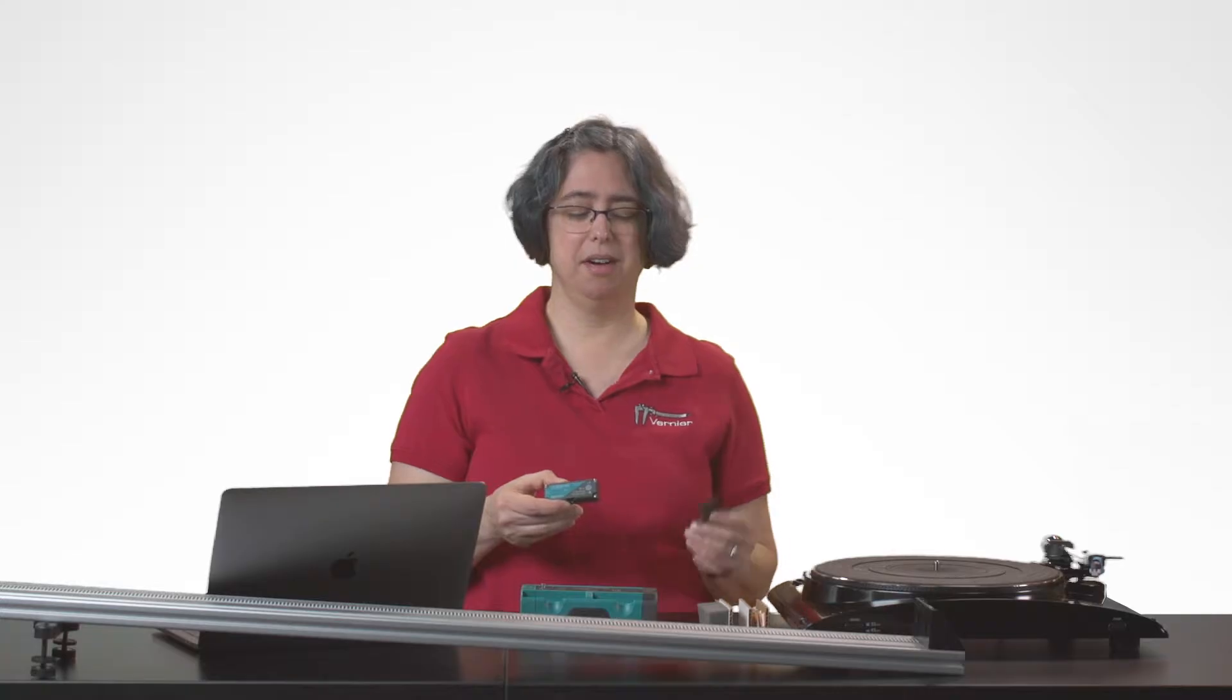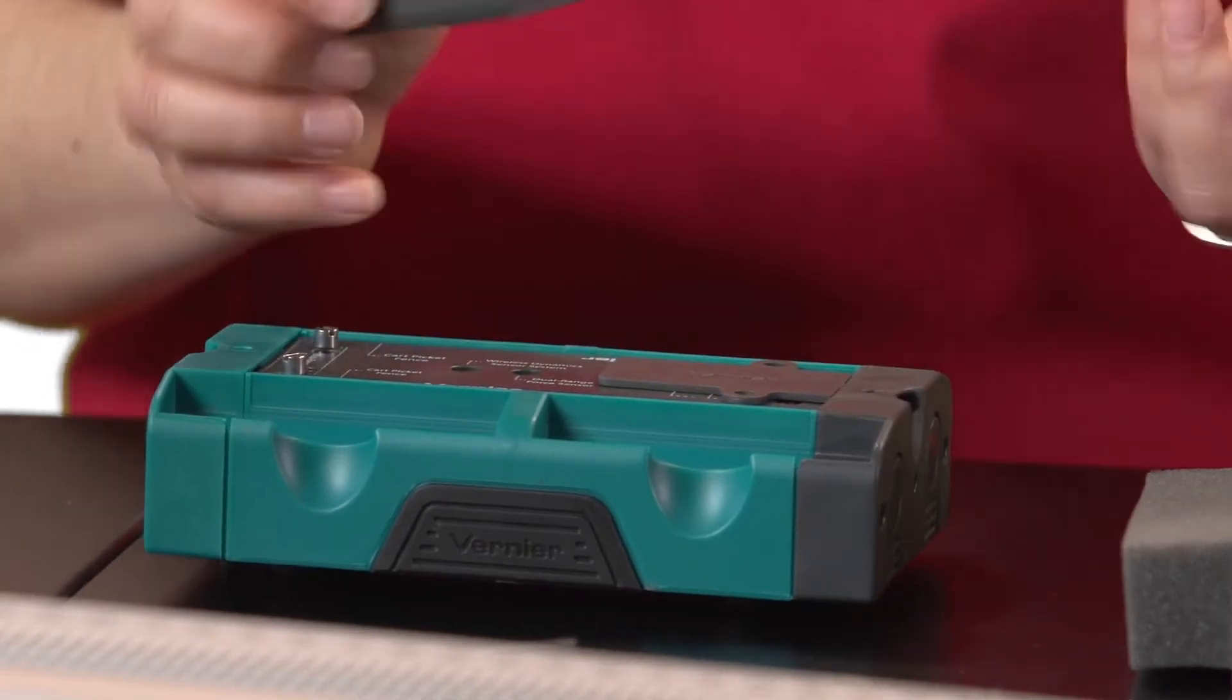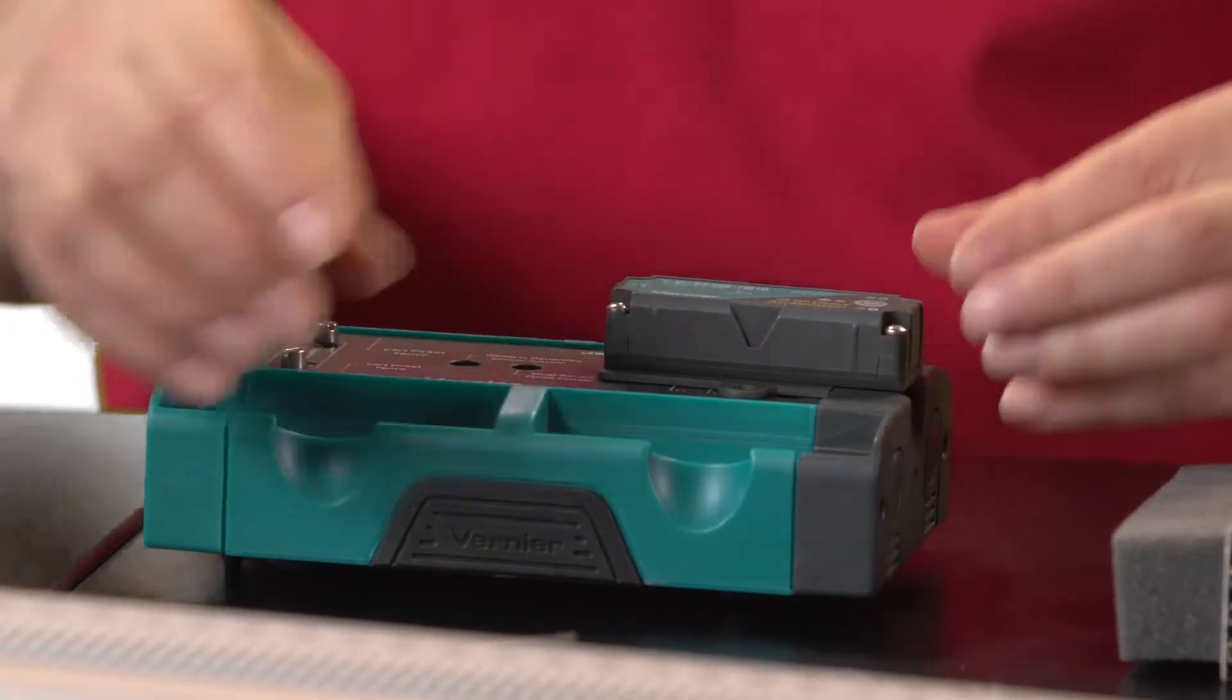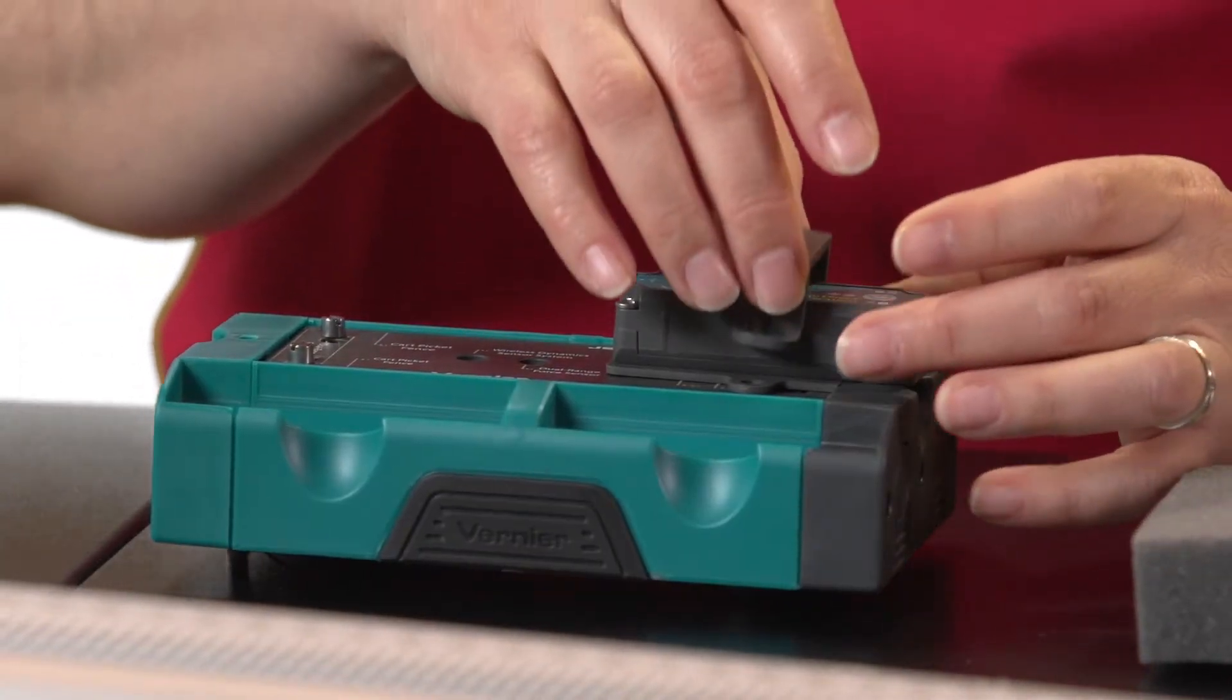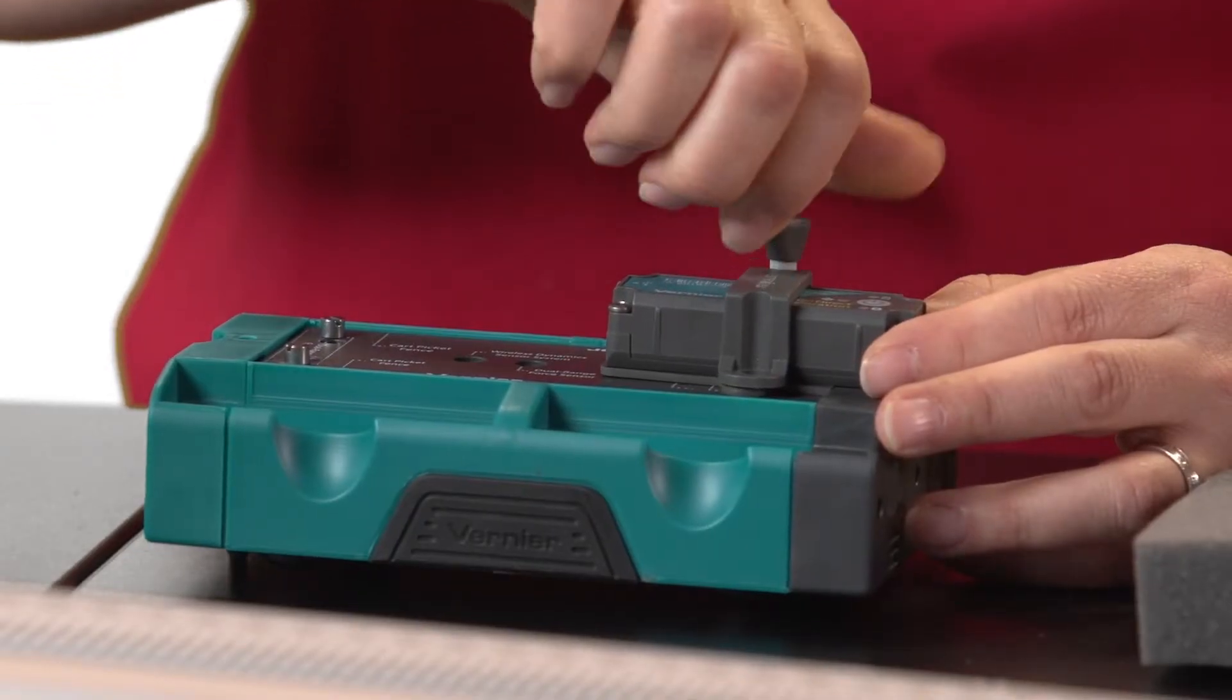To attach it to the cart, I'm going to use a shim that comes with the sensor, place it on the cart, place the sensor on top, and use the bracket and two screws that come with the Dynamics Cart and Track system to attach it.